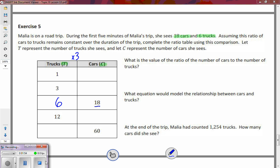To keep the constant the same we have to make sure that it works. One times three gives me three cars, three times three gives me nine cars, six times three gives me the 18.